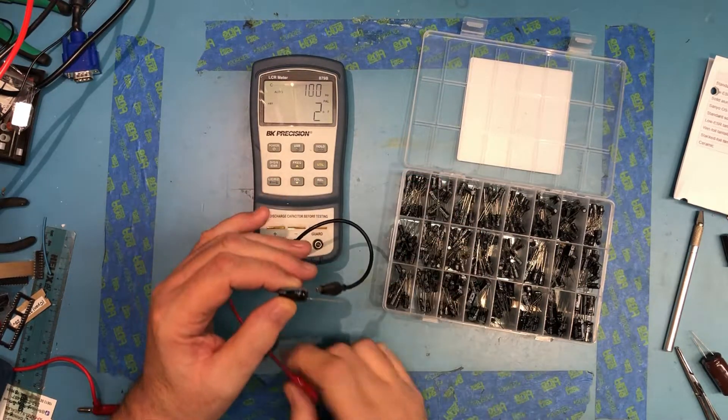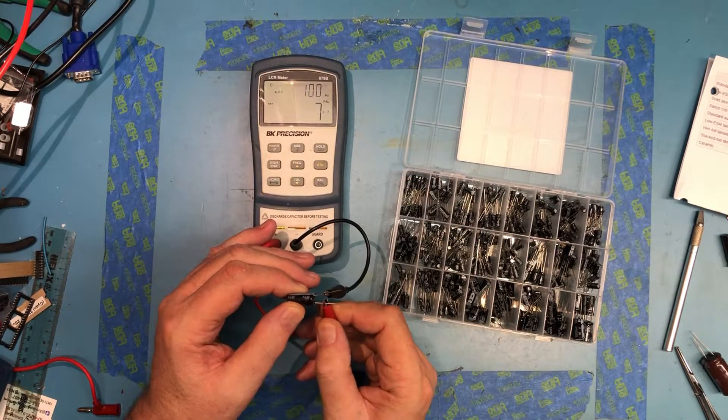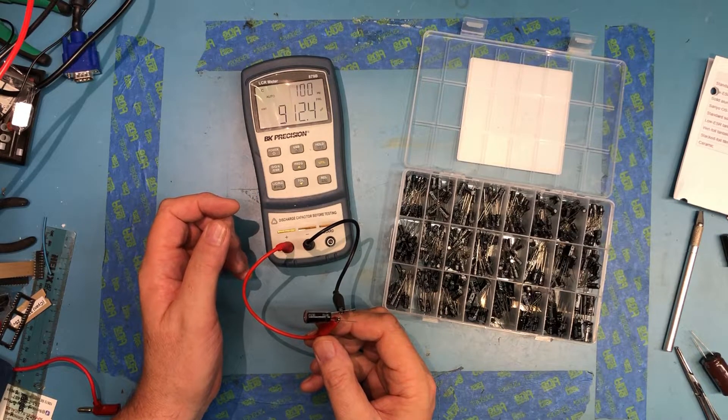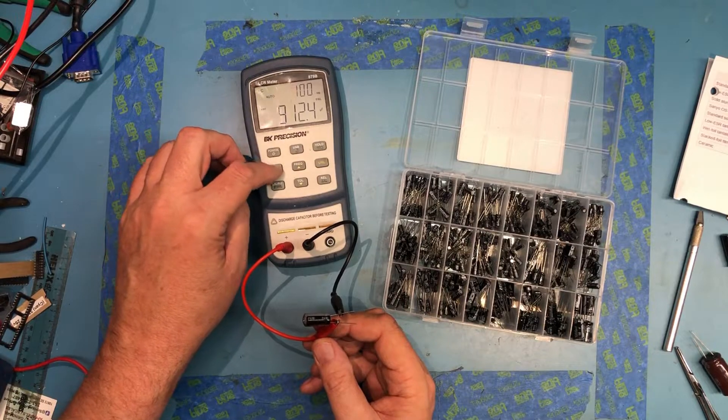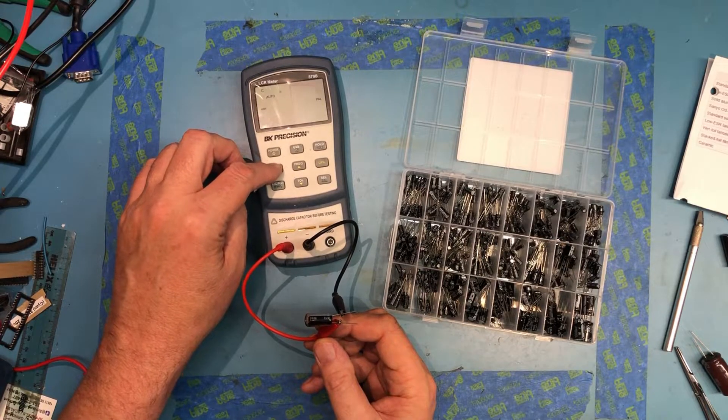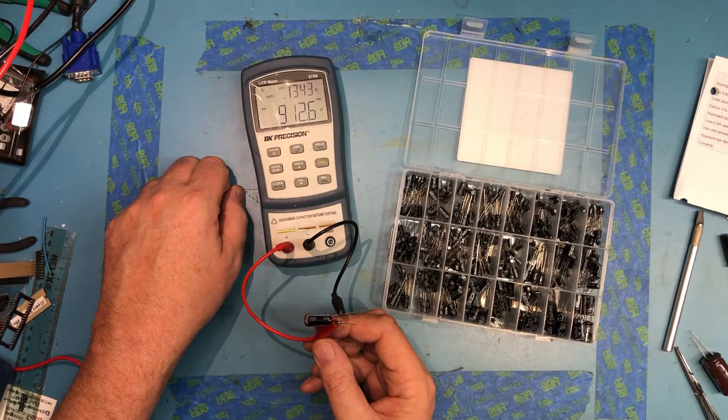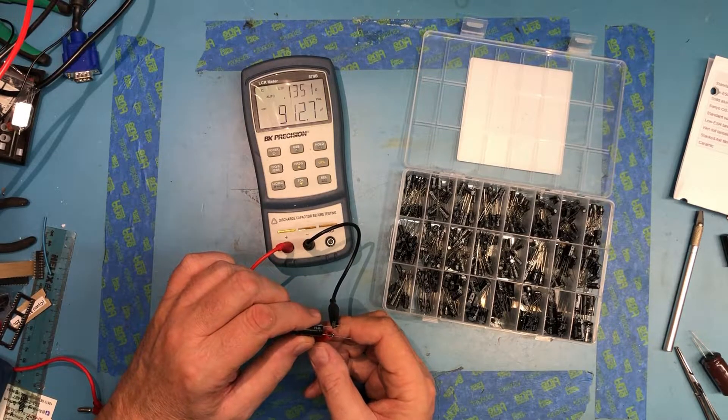So let's take a peek at a Nichicon. Let's see what we see. 912 picofarad. Oops, I was already on ESR. ESR of about 0.13 ohms. 0.14 ohms, yeah, 0.13, 0.14 ohms.